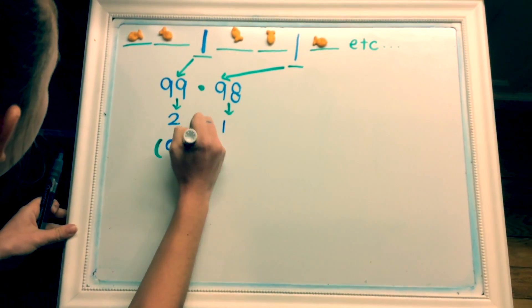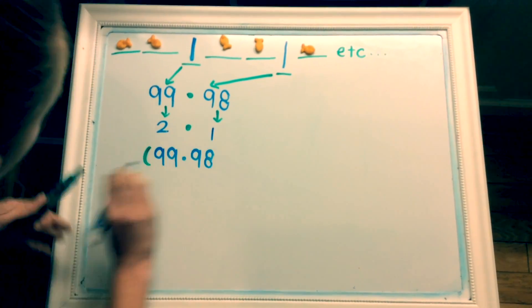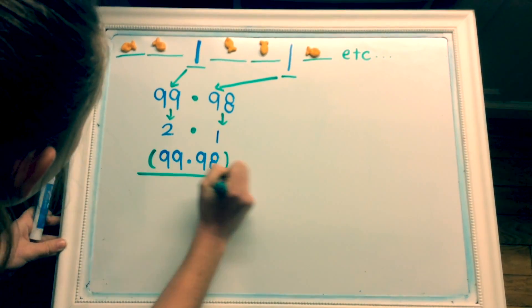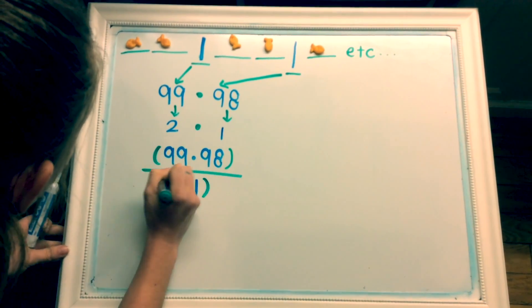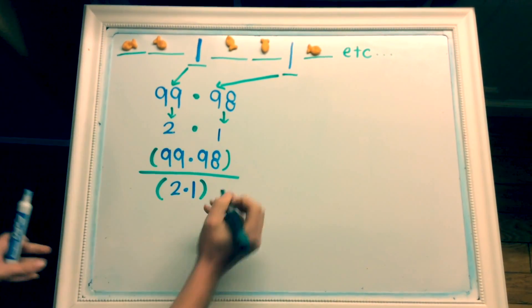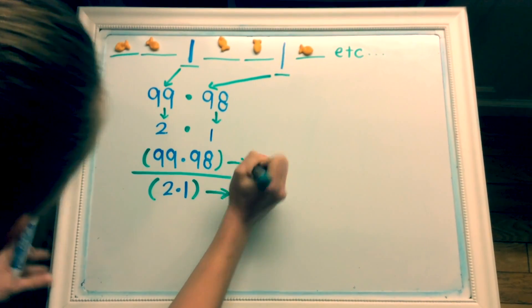Now we will divide the number of slot options, 99 times 98, by the possibilities of the order of which they can be put in their slots, 2 times 1. Now we have the equation 99 times 98 over 2 times 1.